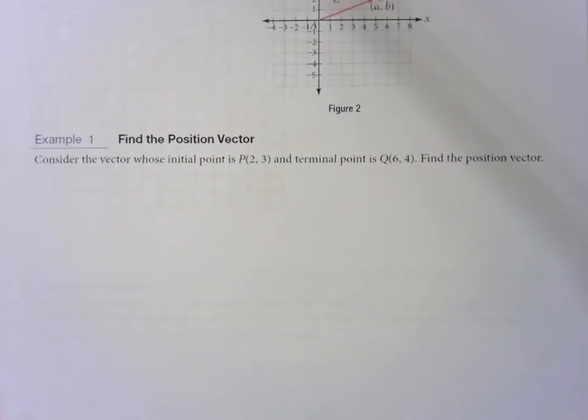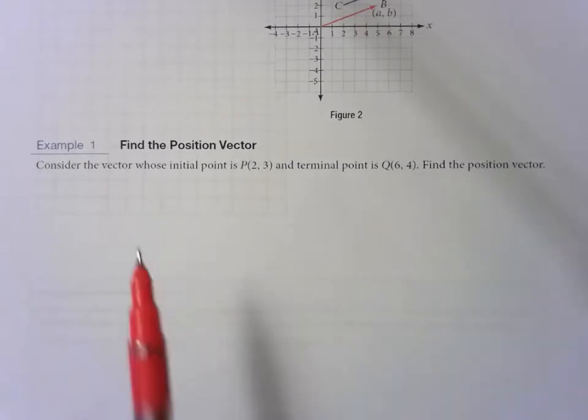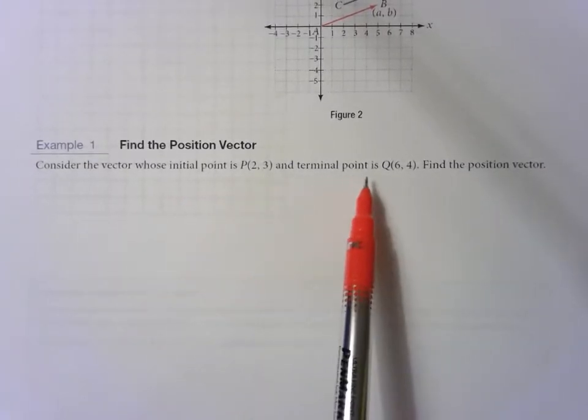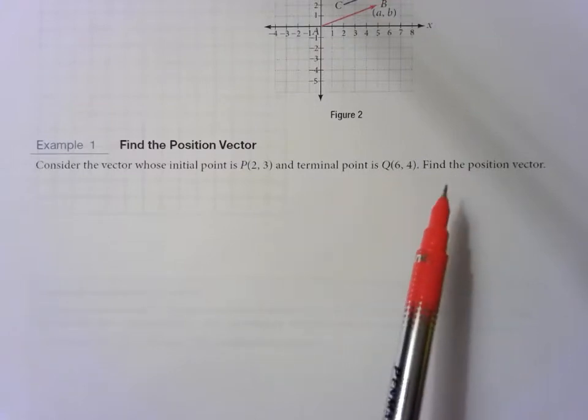Look at this first example. Consider the vector whose initial point is P(2,3) and terminal point is Q(6,4). Find the position vector.